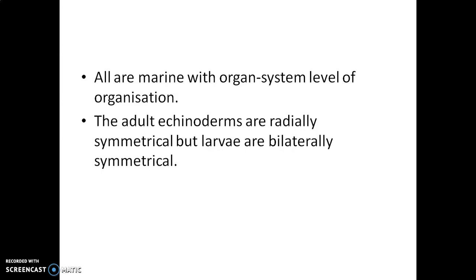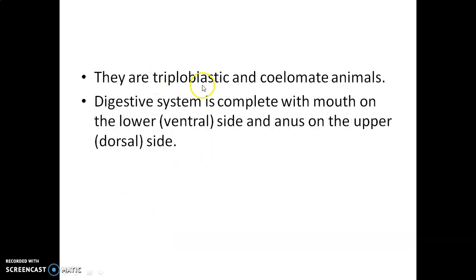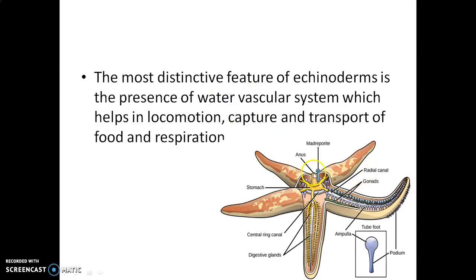All echinoderms are marine with an organ system level of organization. The adult echinoderms are radially symmetrical, but larvae are bilaterally symmetrical — this is an important exam point. They are triploblastic and coelomate animals. Their digestive system is complete, with the mouth on the lower (ventral) side and the anus on the upper side. The most distinctive feature of echinoderms is the presence of the water vascular system.